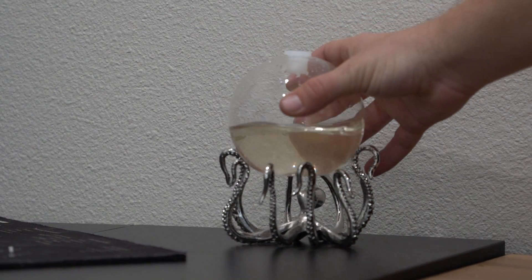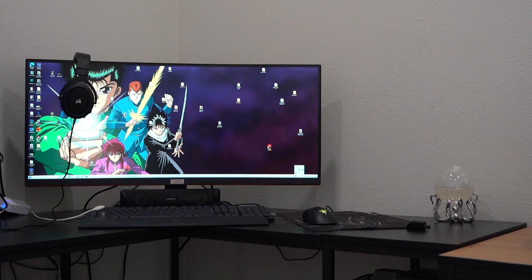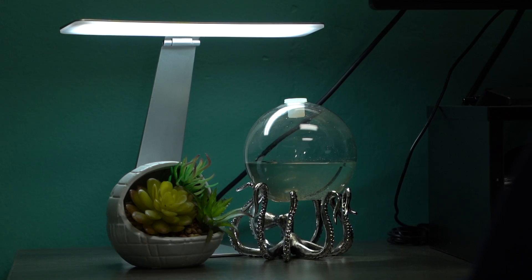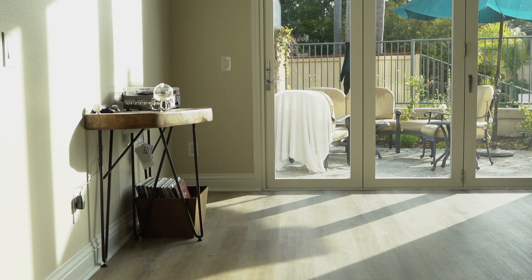Place your Bio Orb in a well lit room. The light can be either reflective or filtered natural light or artificial light or combination of both.